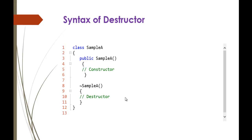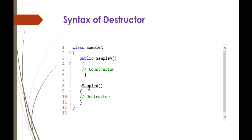Here is the syntax of a destructor. In the previous session we saw how to define a constructor — public SampleA, with no return type and the same name as the class. Similarly, we define a destructor using the tilde symbol followed by the class name. This entire thing — tilde with the class name — is called a destructor.